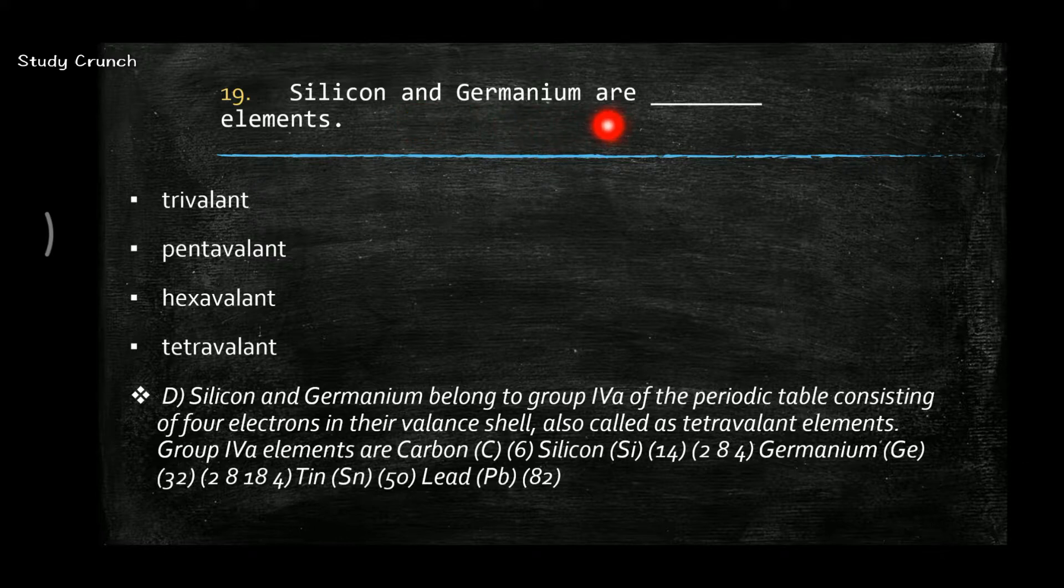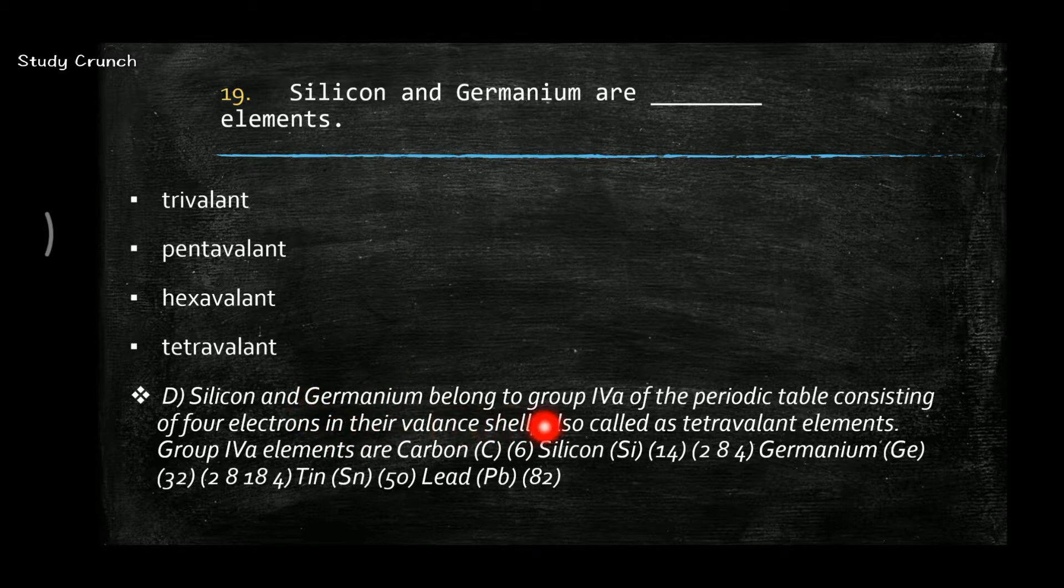Silicon and germanium are tetravalent because they belong to group 4 of periodic table with 4 electrons in their valence shell. We can also define carbon, silicon, germanium, tin, and lead as the 4th group elements.